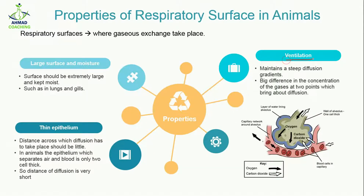The third property is ventilation. Consider a room with an exhaust fan — that fan works as a ventilator, helping remove accumulated gases from the room. Similarly, ventilation in animals maintains a steep diffusion gradient so that no particular gas accumulates in one part. A big difference in concentration of gases at two points brings about diffusion.